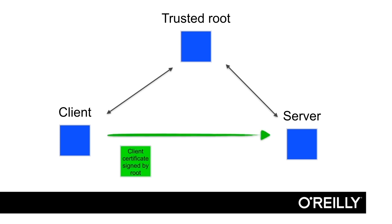Let's say that the client needs to connect to a server. The client has a certificate issued to this client and that certificate is signed by the root. The client sends the certificate over to the server and the server verifies the certificate by looking in his list of trusted roots. If the root server that signed the client certificate is in the list of trusted roots, he can trust the client.